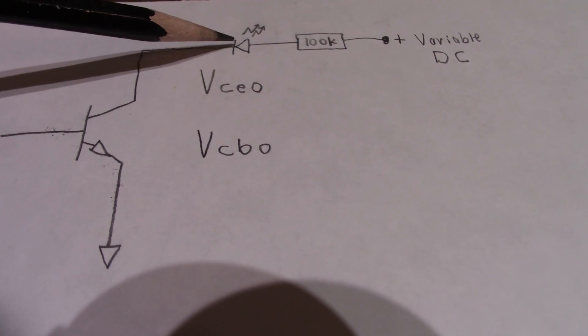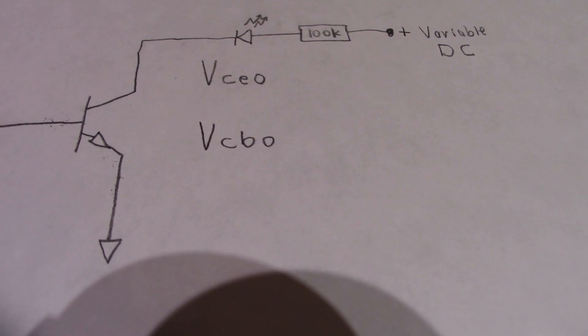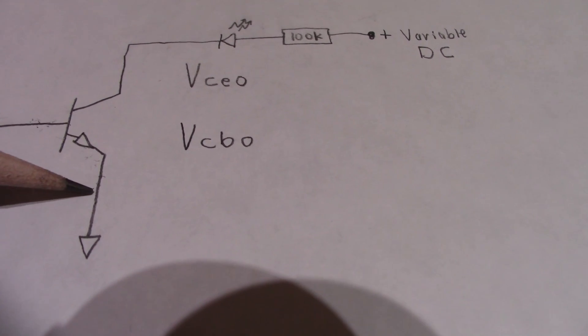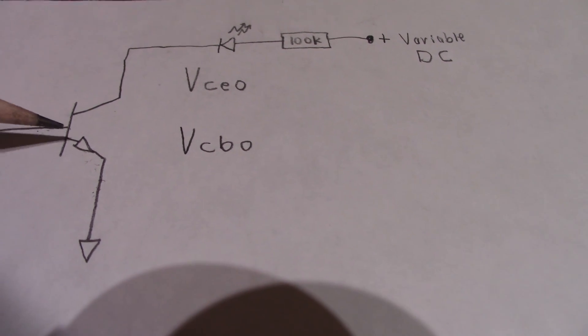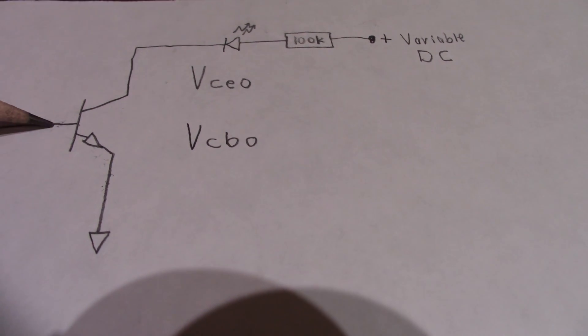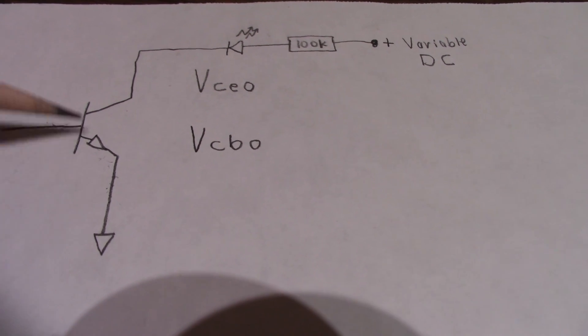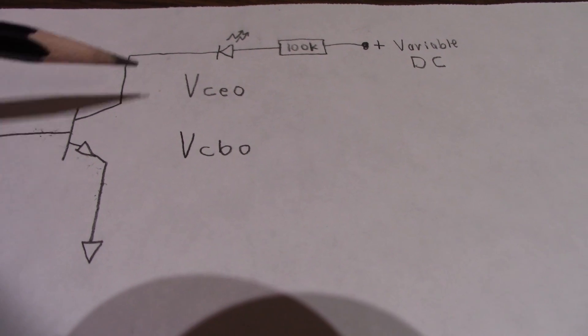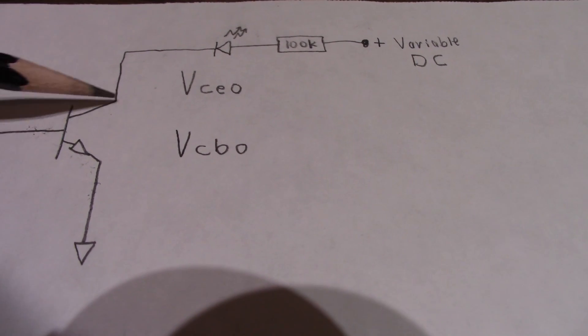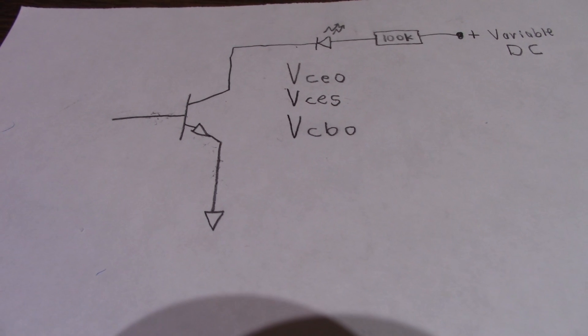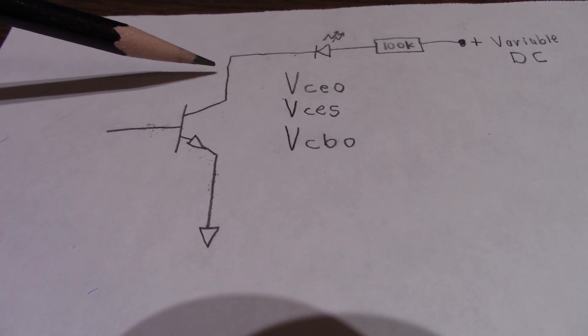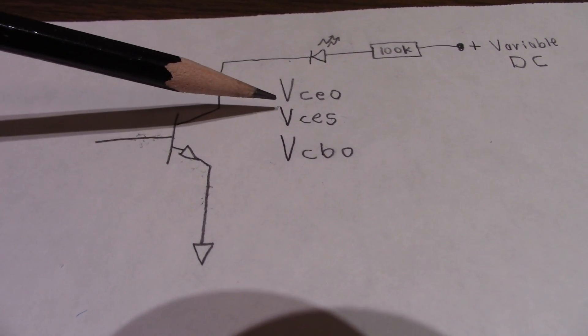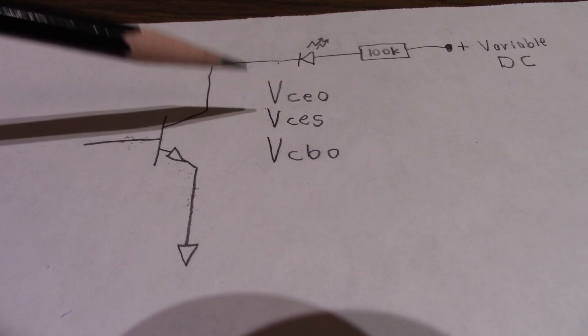So, that leakage current is forward biasing the base emitter junction and allows the transistor to turn on more. That's why we start seeing the LED glow brighter. And when we shorted the base emitter junction together, you can't have the forward bias because you're shorting it directly out of the base to the emitter. So, there's no current passing through the base to emitter junction and no longer can the transistor turn on. And by the way, the breakdown voltage figure when the base and emitter are shorted together is known as VCES.